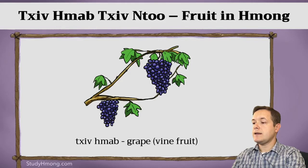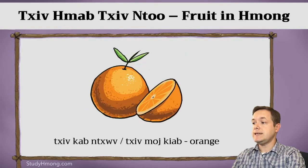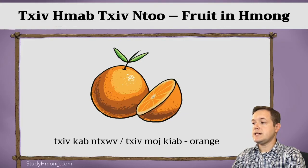A grape, or it translates literally to vine fruit, or fruit of the vine. From my experience, the word for orange — 自甘酥 — is much more common.